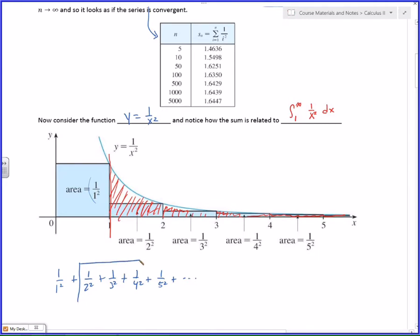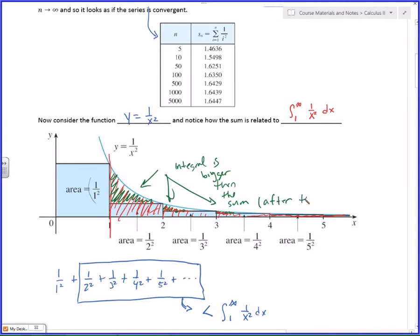This stuff right here, everything inside there is less than the integral from 1 to infinity of 1 over x squared dx. Do you see that? Because of all this extra area. This stuff in here that I've got in green, that, that, this little sliver right there, all of the green means that the integral is bigger than the sum after the first term.